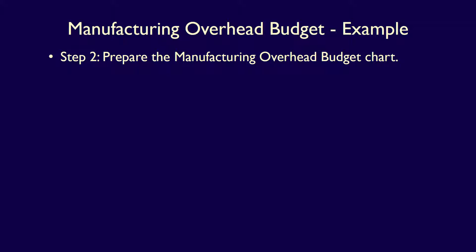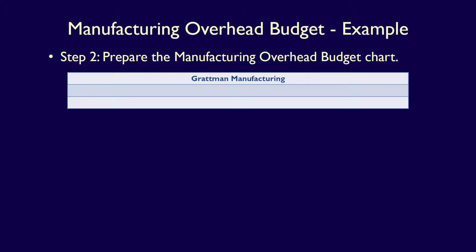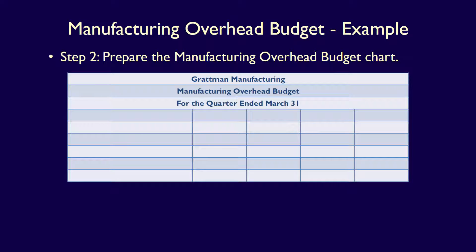Step two is to start and prepare the Manufacturing Overhead Budget using a chart. As always, we start with the title – Gratman Manufacturing – then the name of the budget, Manufacturing Overhead Budget, and the date for the quarter ended March 31. We then add the necessary columns: one column for the description, three columns for the months, and one column for the quarter. The headings are the description, each of the months – January, February, and March – and finally the total column called first quarter. We can now add our first heading, Variable Cost, under which we'll list all variable costs.